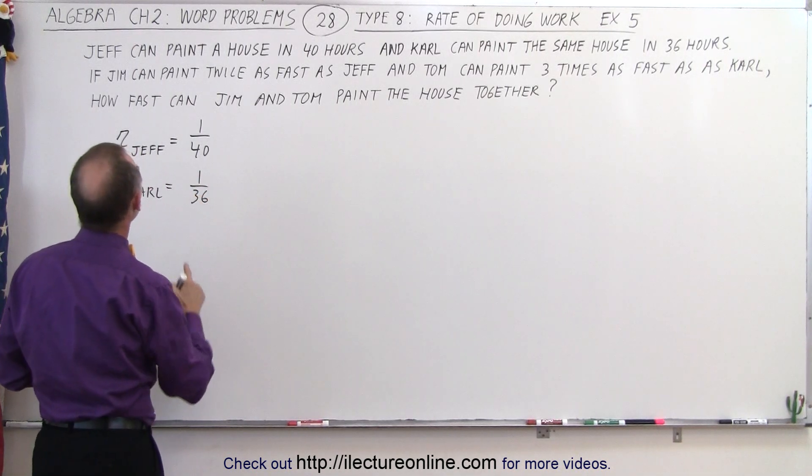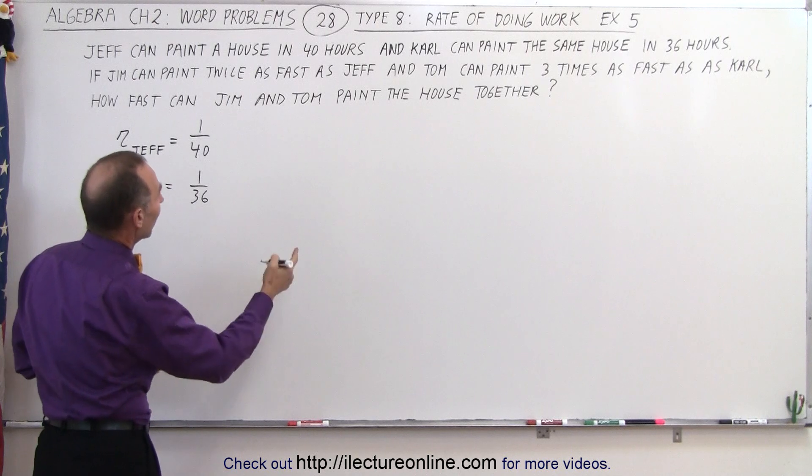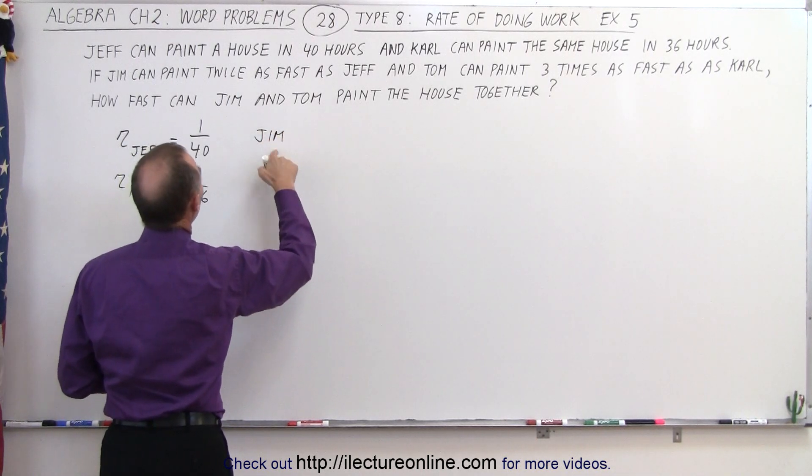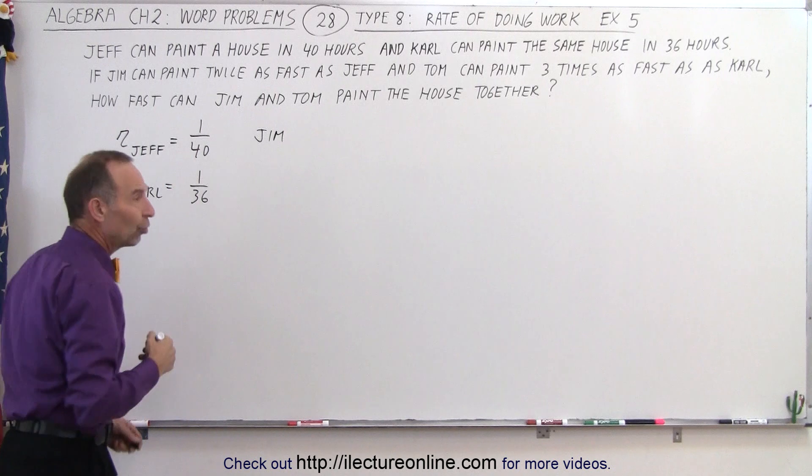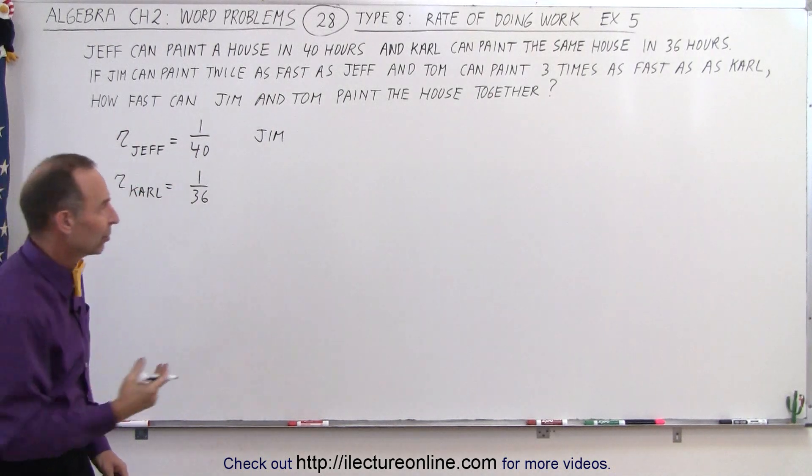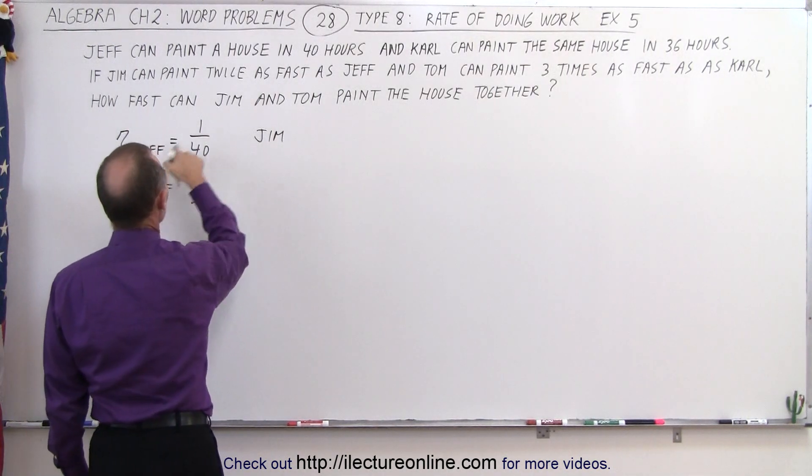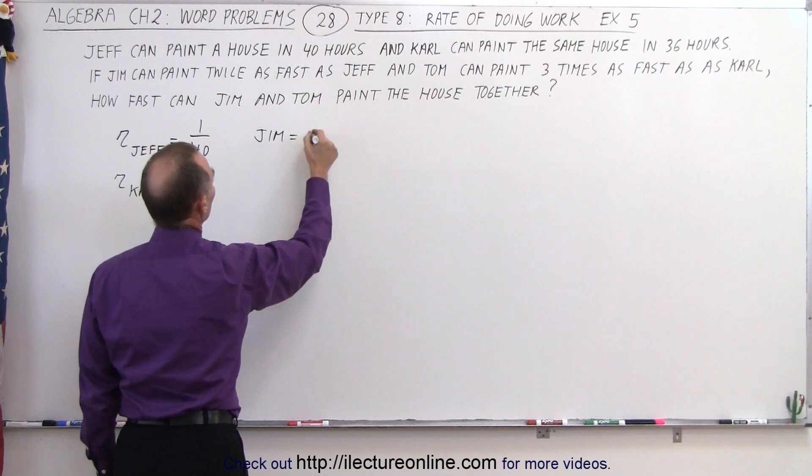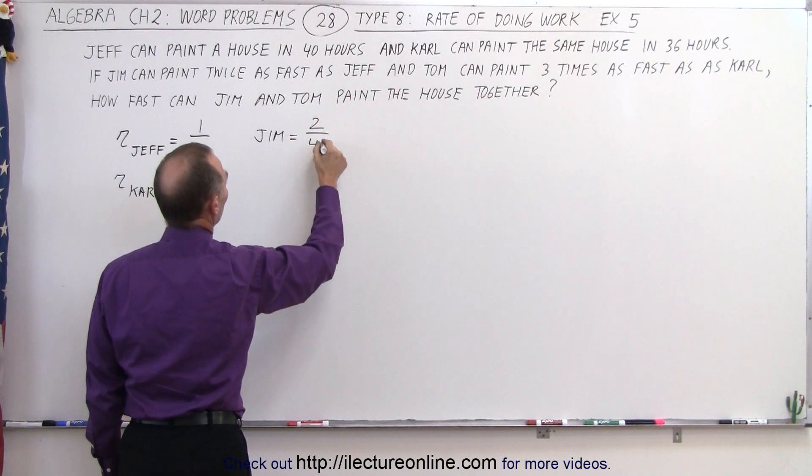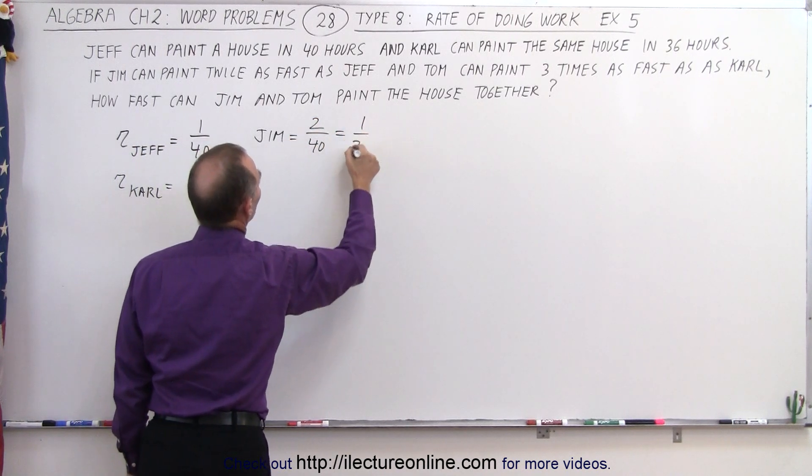Now we have Jim and Tom. Jim can paint twice as fast as Jeff, so he'll have double the rate. In other words, if Jeff's rate is 1/40th, then Jim's rate will be 2/40ths, which is twice as much, or 1/20th.